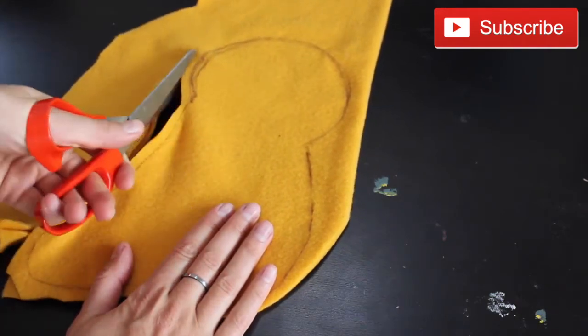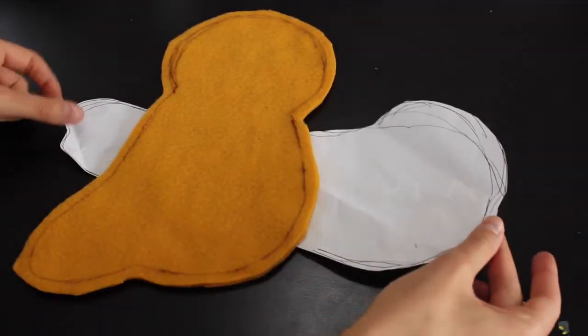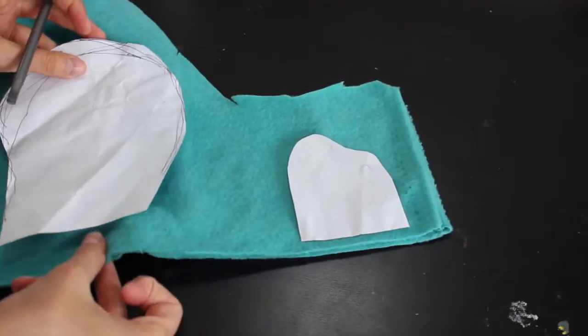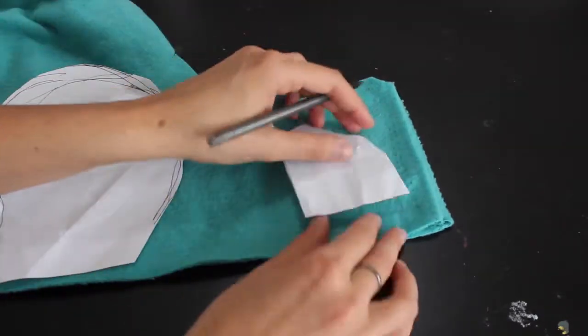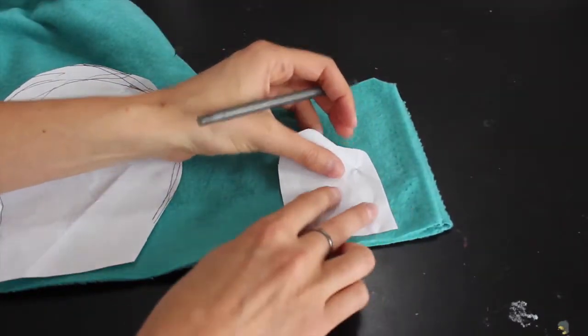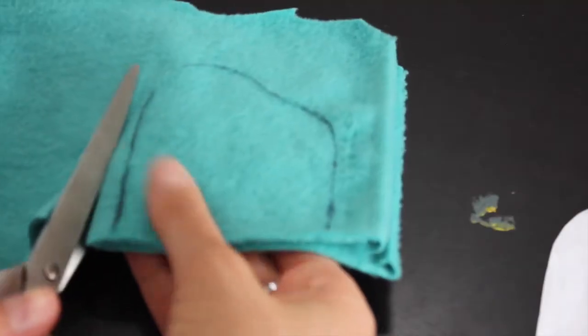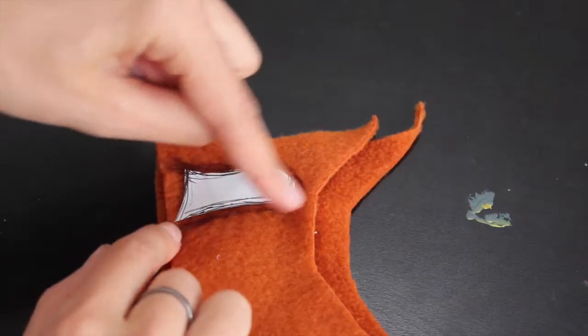Then you're going to cut that out with a 1/4 inch hemline all the way around so that you will have two identical pieces. Then you're going to create the pattern for the extra appendages, in my case the wings, which you will also place onto folded fabric and you're going to just go around that with a pen and then cut it out with a 1/4 inch hemline as well, just like you did with the body piece.